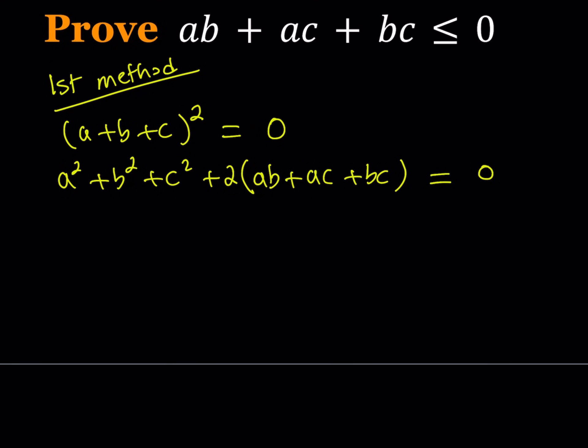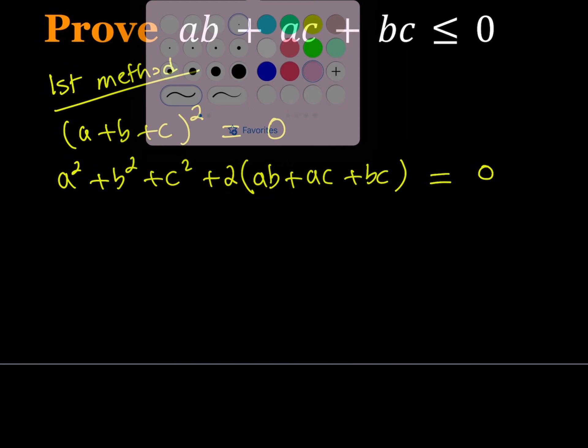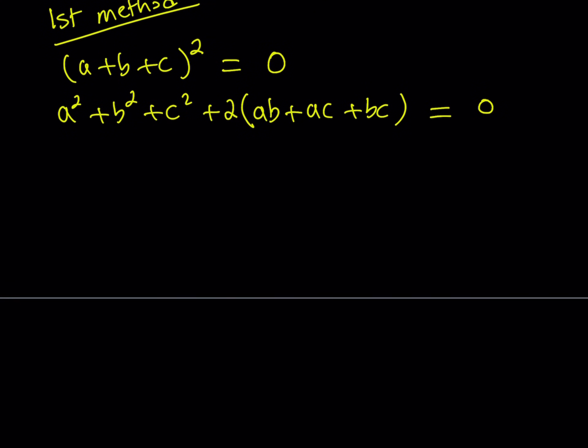This is nice because we're trying to prove that ab plus ac plus bc is less than or equal to zero, and we got that in our expression — even though it's twice that, that's perfectly fine. We're going to proceed by using another well-known inequality, but in order to show you how that works I'm going to quickly prove that inequality.